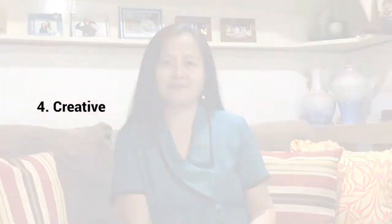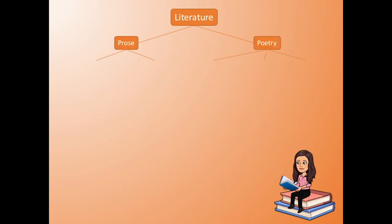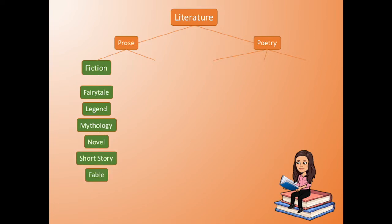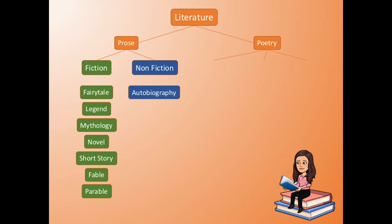The two great classifications of literature are prose and poetry. Prose may be subdivided into fiction and non-fiction. Some examples of fiction are fairy tale, legend, mythology, novel, short story, fable, and parable. Examples of non-fiction are autobiography, biography, newspaper, journal, and magazine.